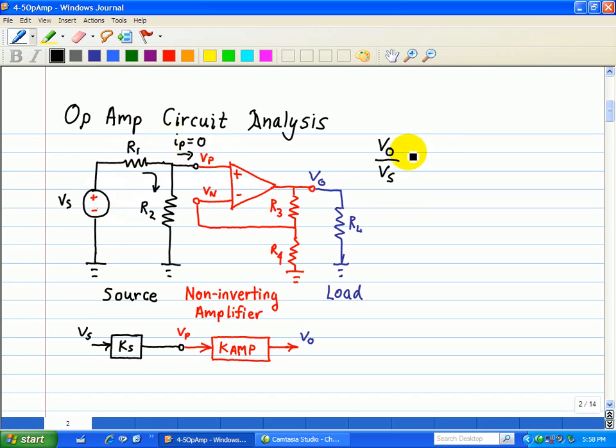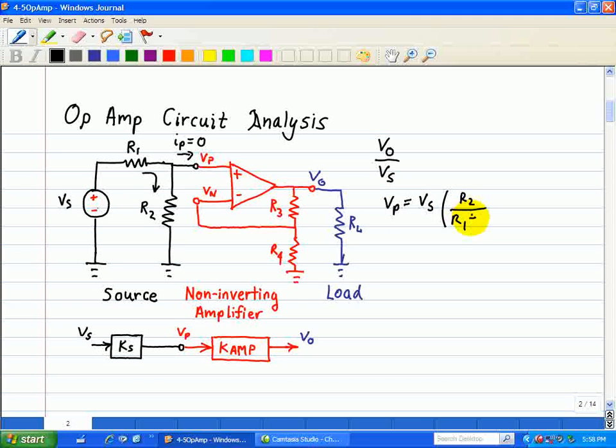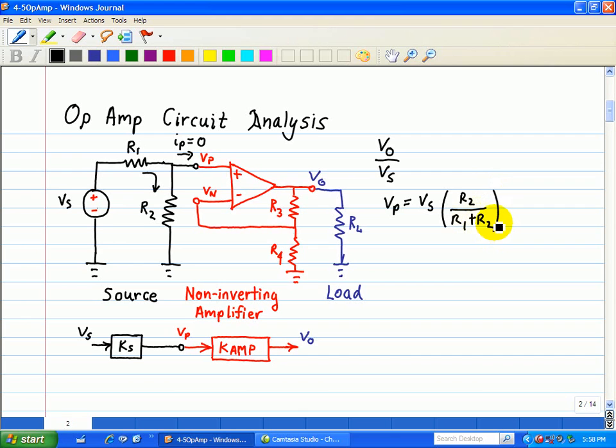Once we know Vp, we can find the relationship between V0 and Vs. So here, Vp using voltage divider is equal to our input source Vs multiplied by a scale factor of R2 divided by R1 plus R2. So Vp divided by Vs is equal to R2 all over R1 plus R2.